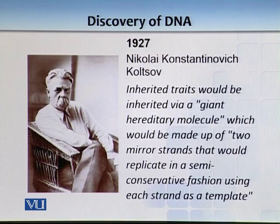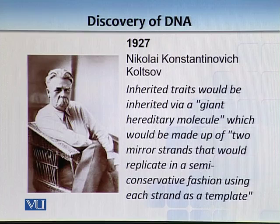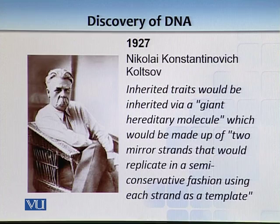In 1927, a Russian scientist, Nikolai Konstantinovich Koltsov, said something very interesting: inherited traits would be inherited via a giant hereditary molecule made up of two mirror strands that would replicate in a semi-conservative fashion using each strand as a template. This is before we knew the structure of DNA — he was essentially hinting at what the hereditary molecule would be. At that time, they only knew there are four bases and there is nucleic acid, but had no clue whether it was a hereditary molecule or not.